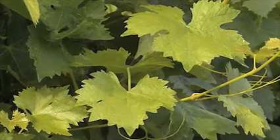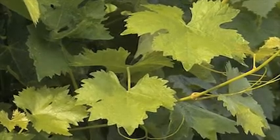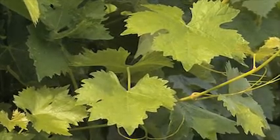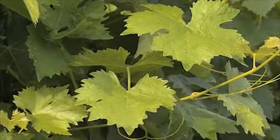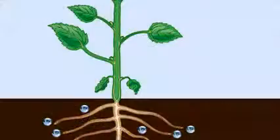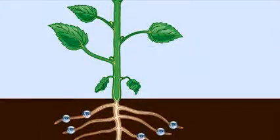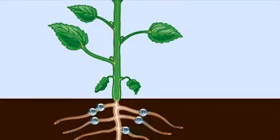In most land plants, oxygen and carbon dioxide enter through the leaves, while water and mineral salts enter through the root system.